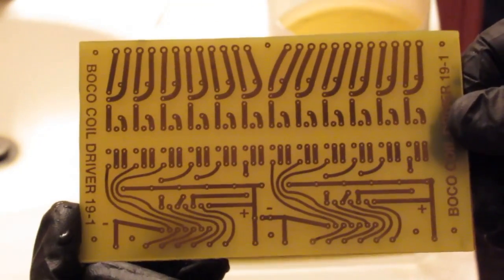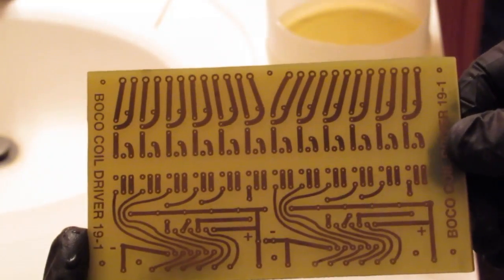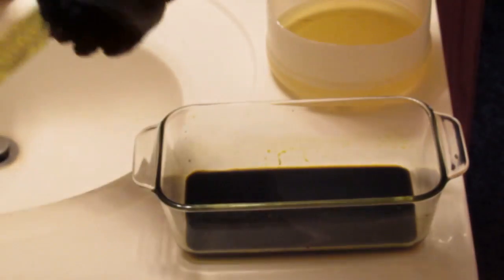A scrub sponge is used to remove the photo emulsion mask from the printed circuit board. Like I said, there were six printed circuit boards that I made during this run. Let's see how they turned out.